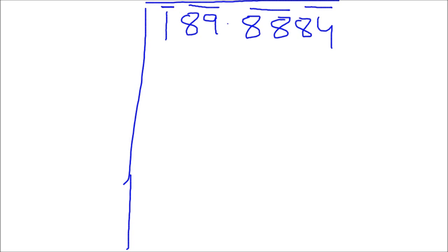Following our steps: guess any number whose square is less than or equal to the first pair number. The first pair is 1, so I guess 1 — 1 squared is 1, which is less than or equal to 1. I write 1 here, put 1 here, and subtracting gives zero. The next step is to double the previous guessed number: 1 times 2 gives 2. Now bring the second pair down — that is 89.